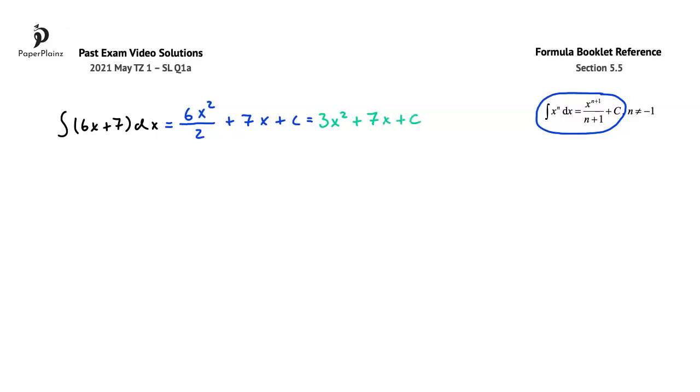A quick exam-taking tip to take away from here is to make sure that when you're finding indefinite integrals, you always include the constant of integration at the end, so usually plus c. Here for example, we have a 3-mark question, and if you forget to include plus c, the constant of integration from the expression, you only earn 2 marks.